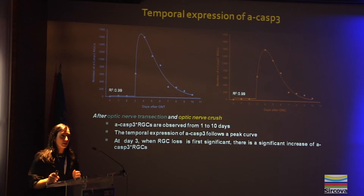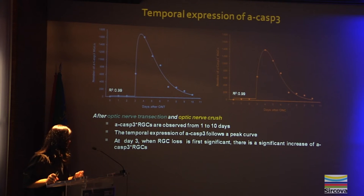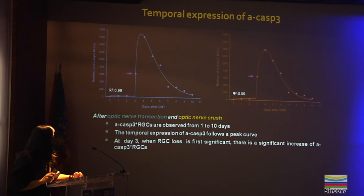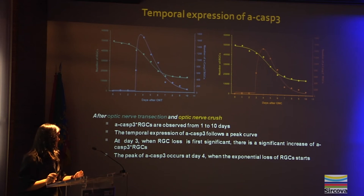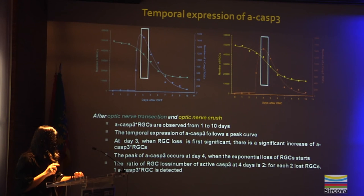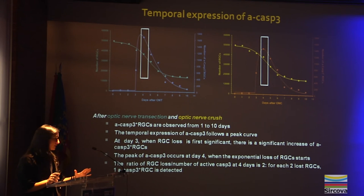In this graph, the number of active caspase-3 positive cells is shown at different time points post optic nerve transection and optic nerve crush. After both lesions, active caspase-3 positive ganglion cells are observed from 1 to 10 days. The temporal expression of active caspase-3 follows a peak curve. At day 3, when ganglion cell loss first becomes significant, there is a significant increase of active caspase-3 positive ganglion cells. The peak of active caspase-3 occurs at day 4, when the exponential loss of ganglion cells starts. The ratio of ganglion cell loss to active caspase-3 at day 4 is 2:1 — for each 2 lost ganglion cells, one active caspase-3 positive ganglion cell is detected.